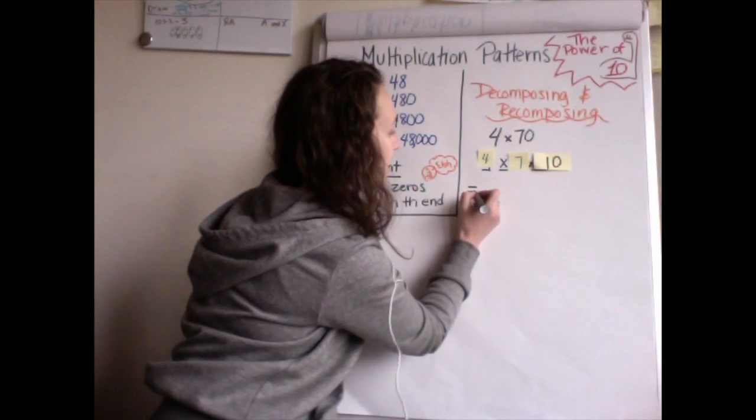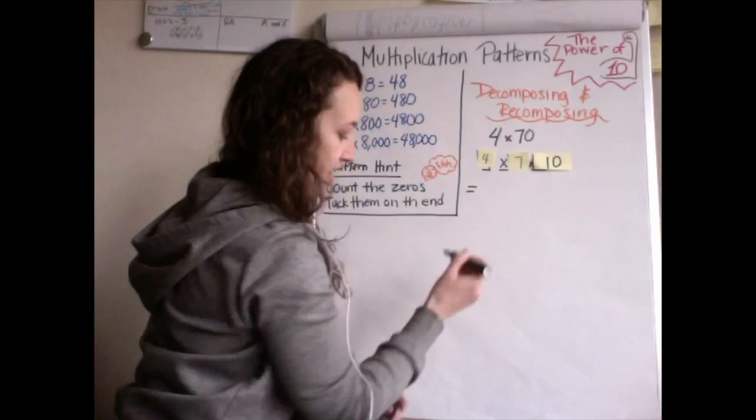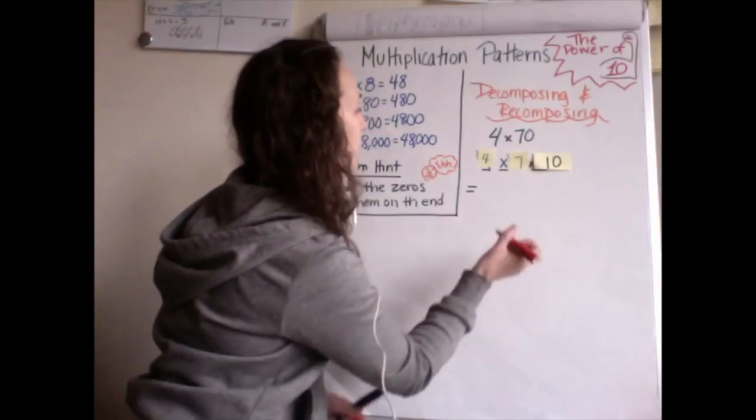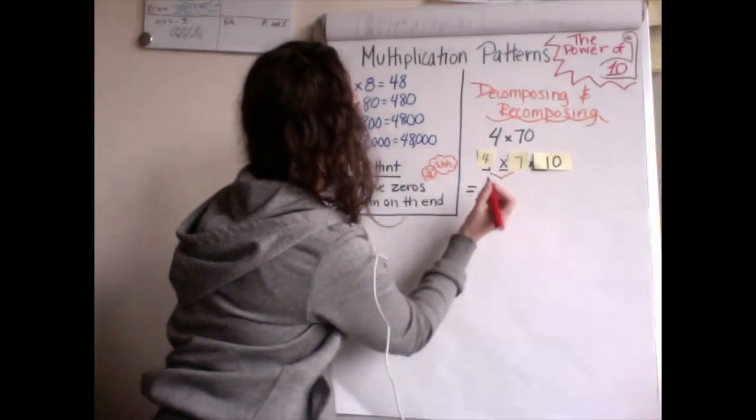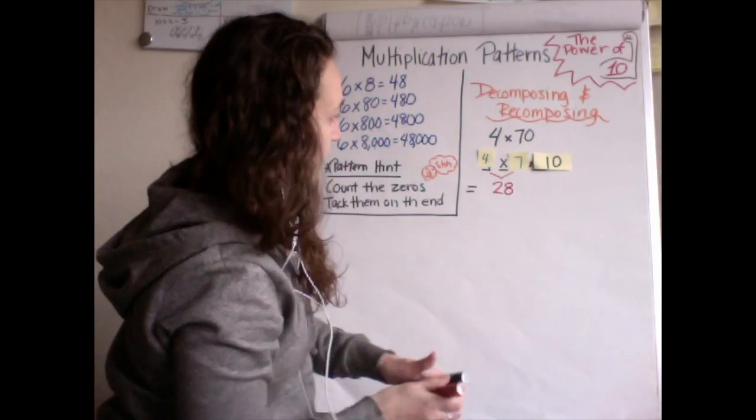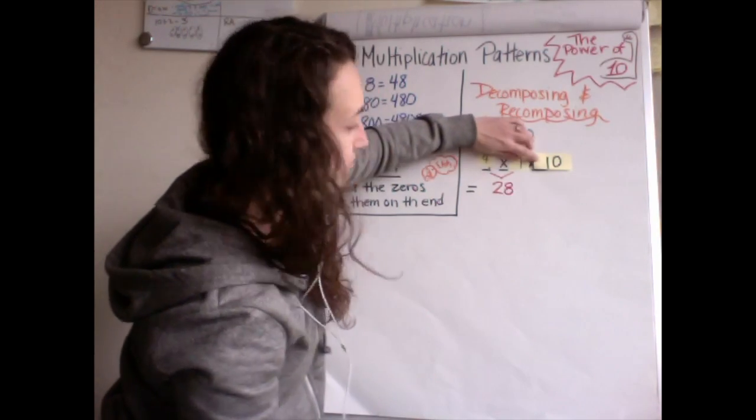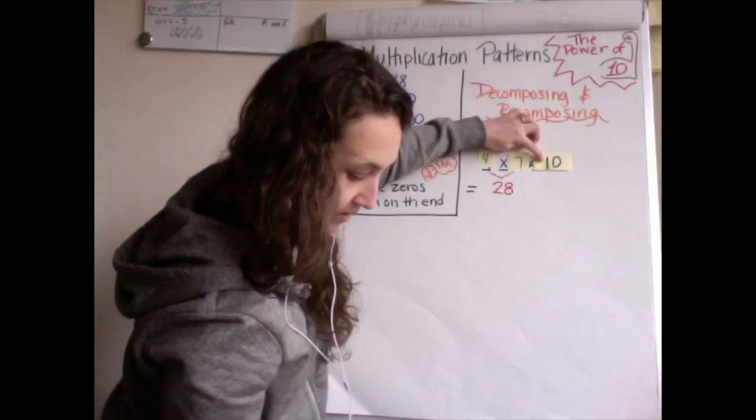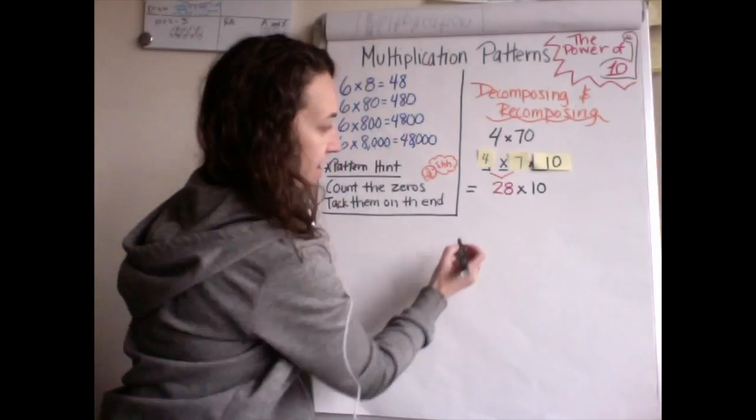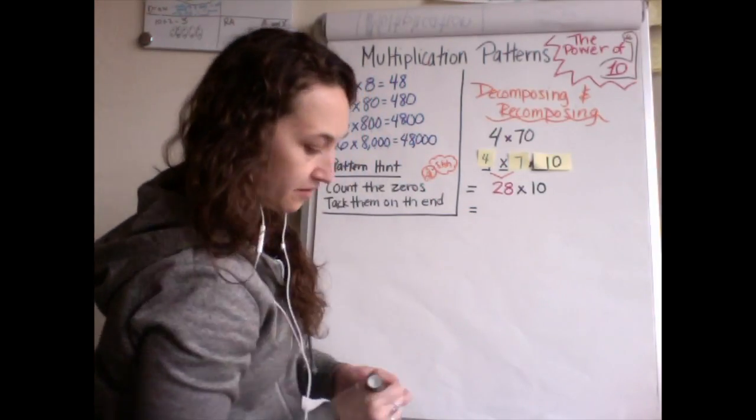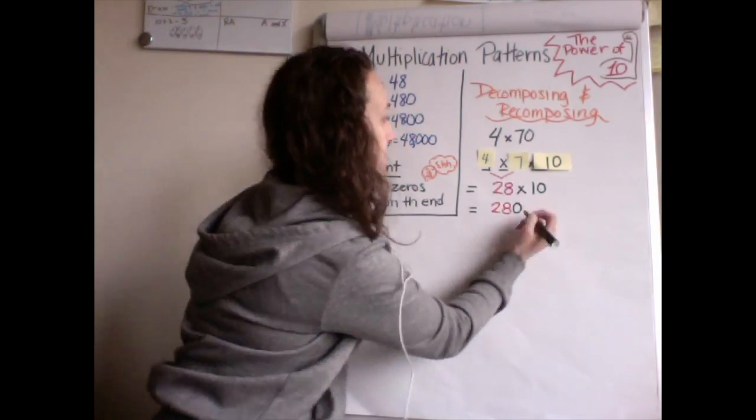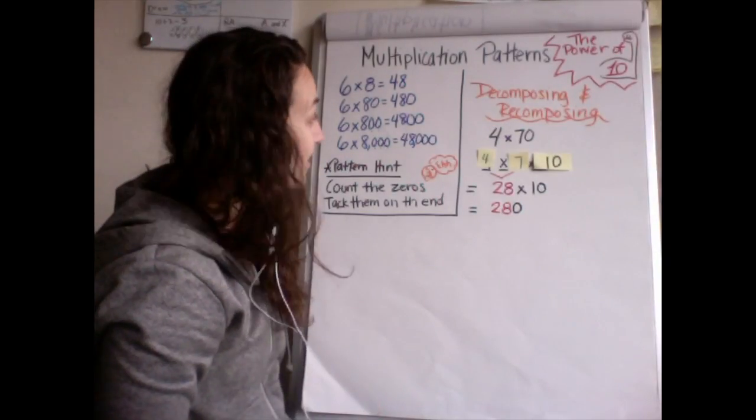And then I'm going to recompose it by multiplying these two numbers together. So four times seven, I know is 28. So that was my four times seven. And now I'm just going to multiply times 10 one more time. So four times seven times 10. And then I multiply them all together. Four times seven times that 10. And that is how we decompose these numbers.